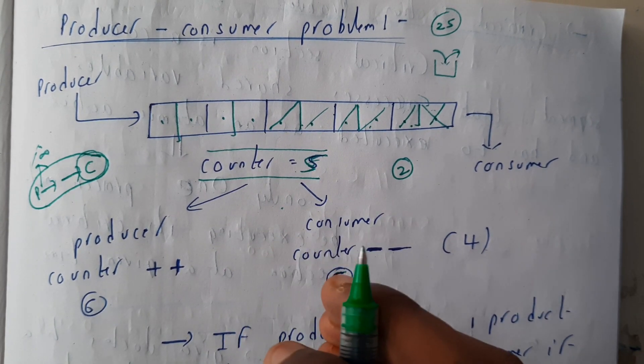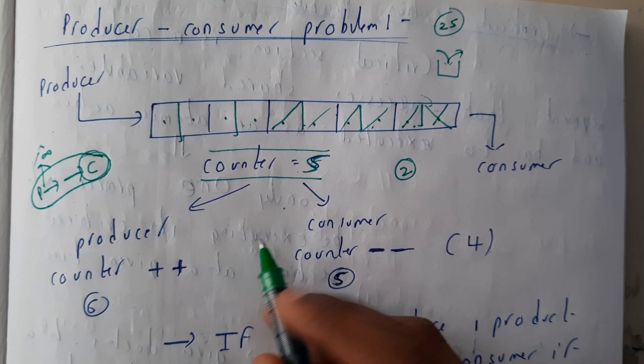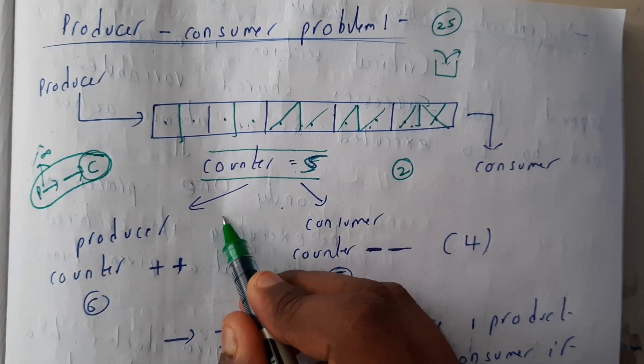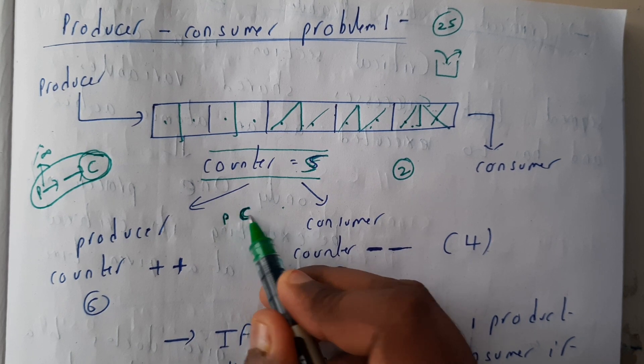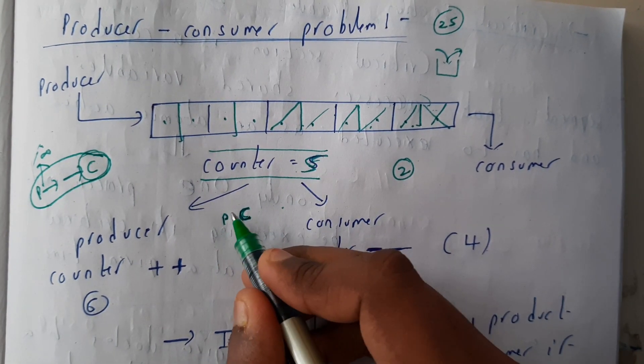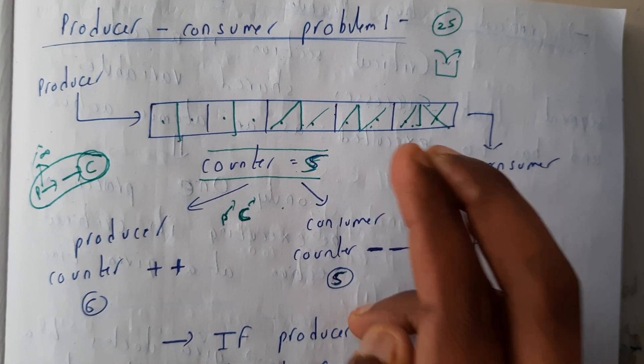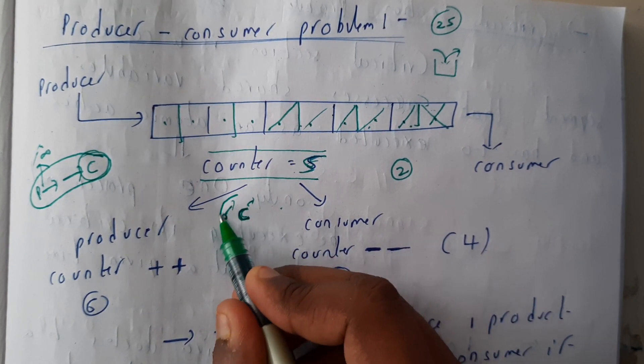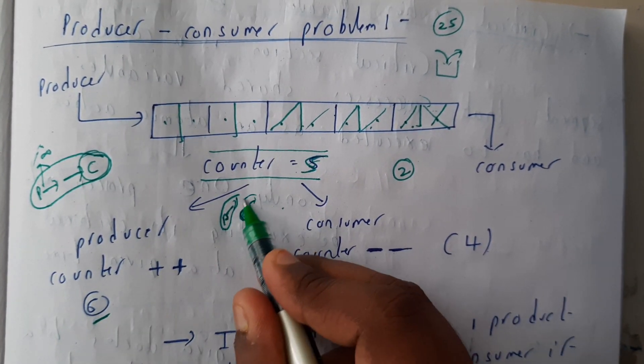But there is a special case when the producer is producing and at that exact moment of time the consumer consumed the item. First producer produces the item and at that exact moment consumer consumed it. They both happened at the exact same time. Unfortunately, the producer incremented it from five to six and the consumer decremented this value. Instead of decrementing this, he decremented that, so now the value became four.